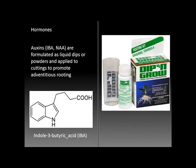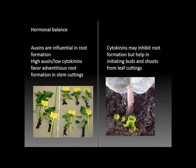Success in making cuttings is promoted by the use of auxins. Two commonly used auxins are IBA (indole-3-butyric acid) and NAA. These materials are formulated as liquid dips or powders and applied to the base of cuttings to promote adventitious rooting. While auxins are influential in root formation, cytokinins—another hormone—may actually inhibit root formation but help in promoting bud and shoot development from leaf cuttings. The key, as in many plant processes, is the balance between competing hormones: high auxin and low cytokinin levels favor adventitious root formation in stem cuttings.